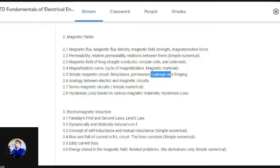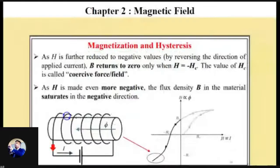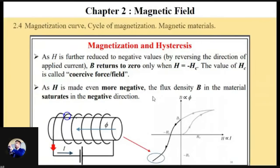Now we are going to see these two remaining points: leakage and fringing in the magnetic circuit. I hope you all are ready to learn about this. Let's see what exactly magnetization is all about.